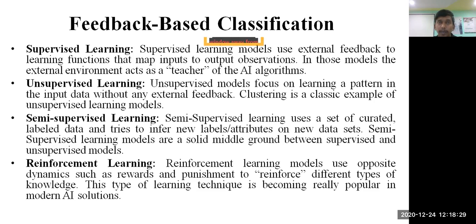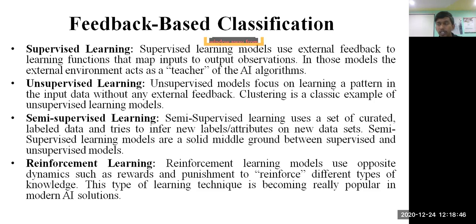In supervised learning, you have what the input is and what the output is, and according to that a supervisor has a mapping function about how it should be followed. The external environment acts as a teacher of the AI algorithm — that is why it is called supervised learning. The best examples of supervised learning are classification and regression.